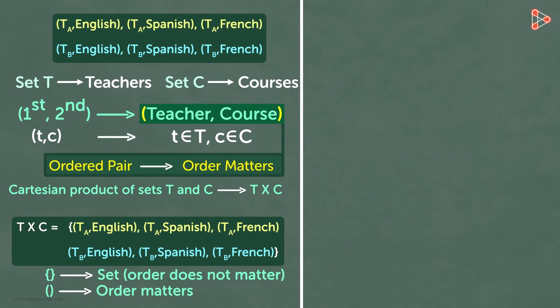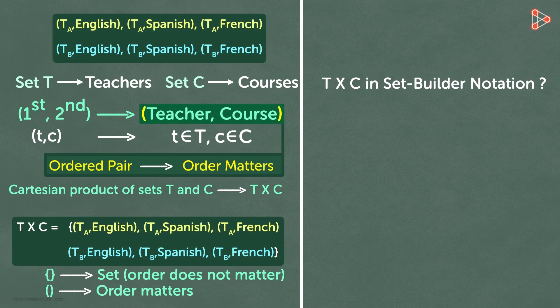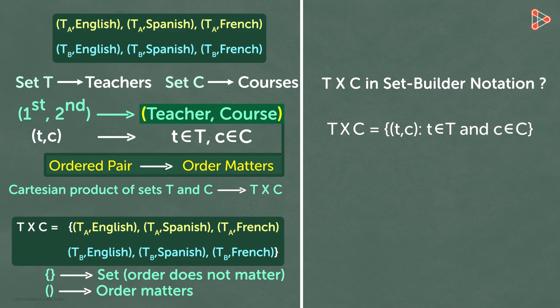Now, we can also write the Cartesian product of sets T and C using the set builder notation. We write it like this: T cross C is equal to curly bracket open, followed by t comma c in round brackets, such that t belongs to set T and c belongs to set C, curly brackets close.